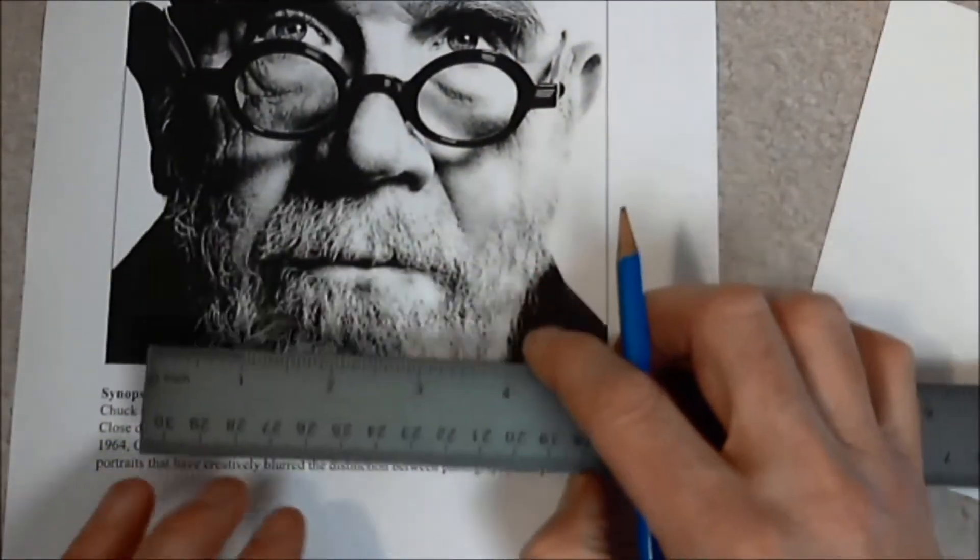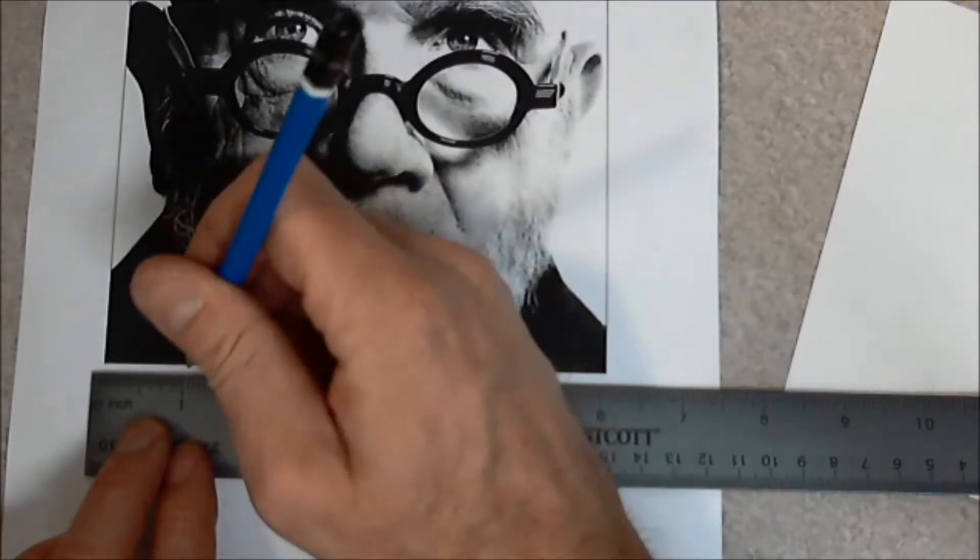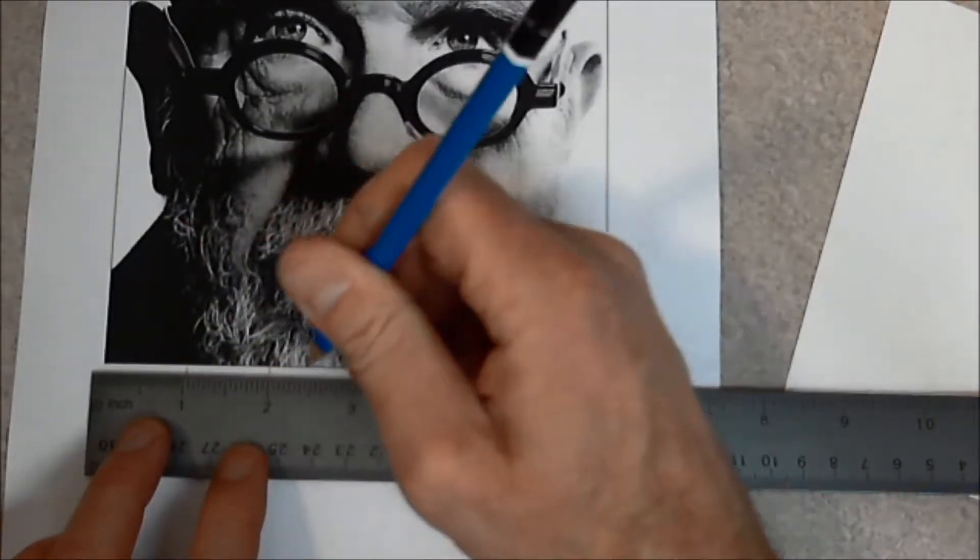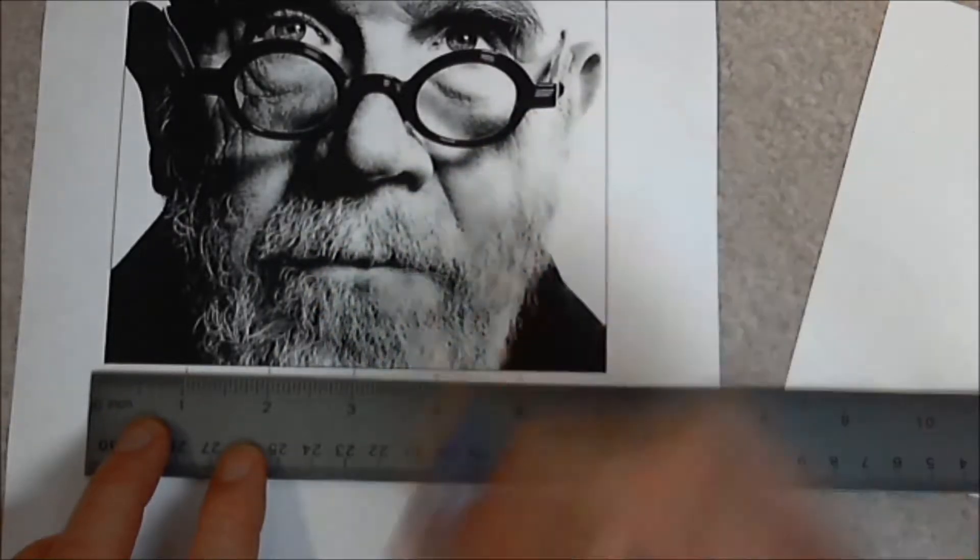I'm going to slide my ruler down and mark it off one, two, three, four, five, and six.